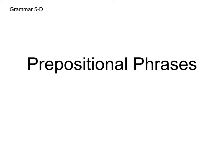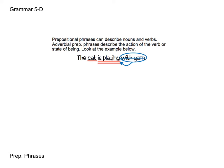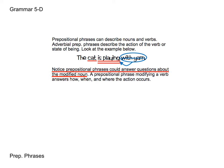Now we're going to go back into prepositional phrases, which we have learned a lot about. We know that prepositional phrases can describe nouns and verbs. An adverbial prepositional phrase describes the action of the verb, or the state of being if you have a linking verb. Let's look at a basic example: The cat is playing with yarn. With yarn is modifying how the cat is playing — it answers a question about the verb. Notice that prepositional phrases could answer questions about the modified noun, but a prepositional phrase modifying a verb is going to answer how, when, or where the action occurs.